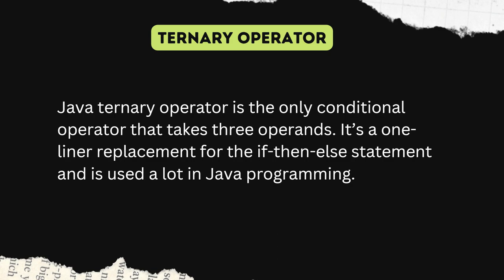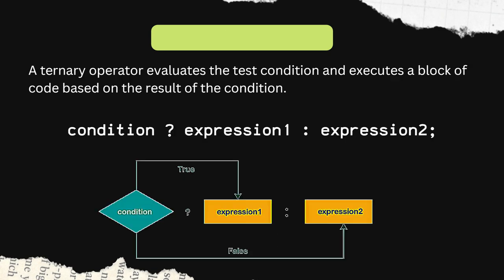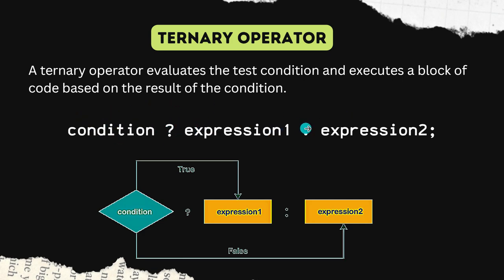The ternary operator is a one-liner replacement for the if-then-else statement. So we can replace an if-then-else statement in one line. Let's see the syntax. The syntax is: condition, question mark, expression one, colon, expression two.